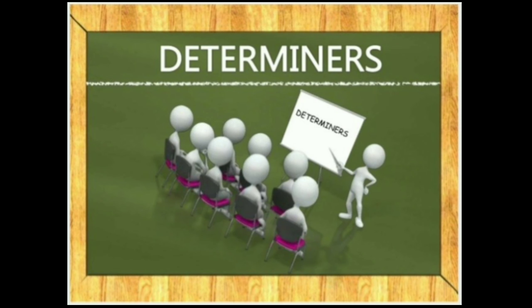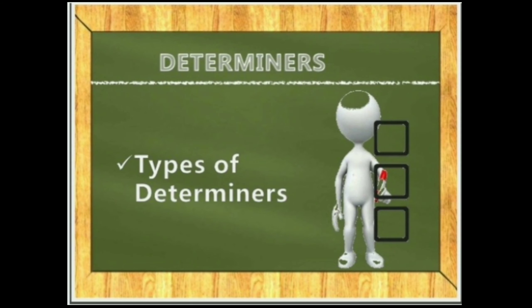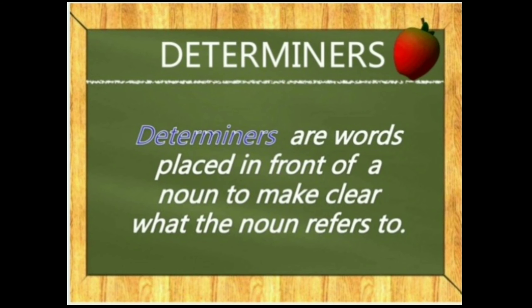Good morning, my dear students. Today I am here with a new session on a grammar topic: determiners and types of determiners. Determiners are words placed in front of a noun to make clear what the noun refers to. We can define it as: determiners are words which identify or specify a noun in some way.